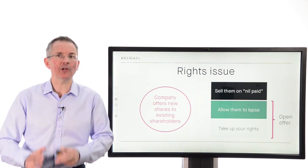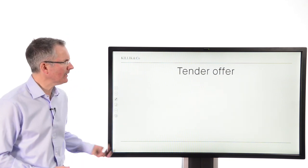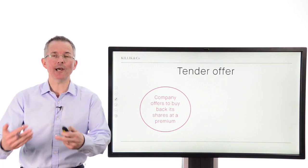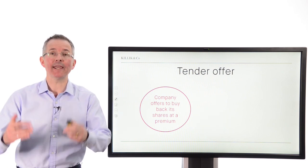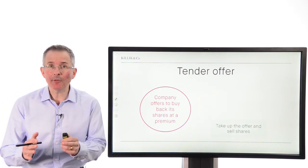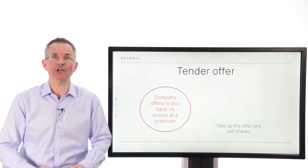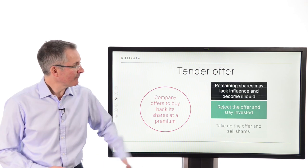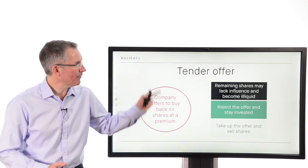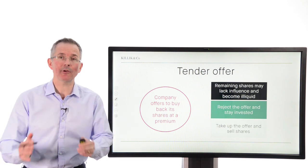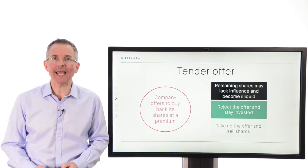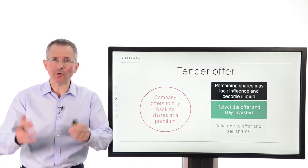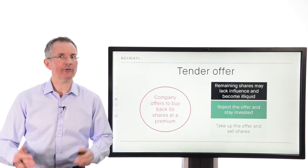Number two: the tender offer — sort of the opposite. Here the company is trying to buy back shares from shareholders, usually at a premium, because it wants you to take up the offer. Your choice is to take up the offer and sell your shares back to the company, or reject the offer and stay invested. Bear in mind that depending on the size of the offer, remaining shares could lack influence in terms of voting rights, or become quite illiquid if lots of other shareholders have given up their shares.